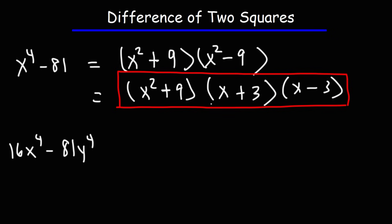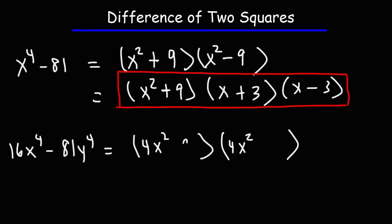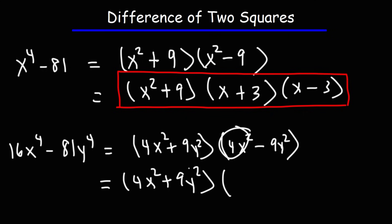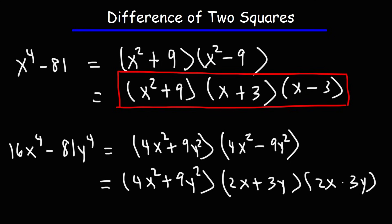Now let's try 16x to the 4th minus 81y to the 4th. The square root of 16 is 4, and the square root of x to the 4th is x squared, so we have 4x squared. The square root of 81 is 9, and the square root of y to the 4th is y squared, giving 9y squared. So we get 4x squared plus 9y squared times 4x squared minus 9y squared. We can factor the second part again as a difference of two squares: the square root of 4x squared is 2x, and the square root of 9y squared is 3y. So the final answer is 4x squared plus 9y squared times 2x plus 3y times 2x minus 3y.